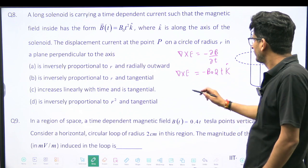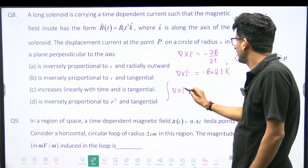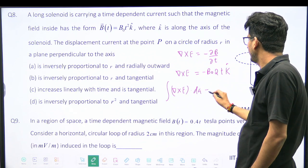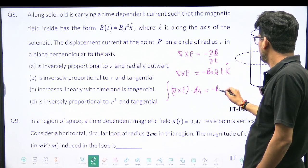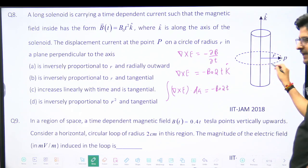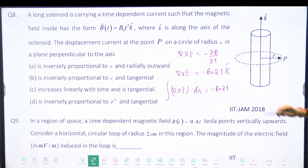Now integral del cross E dot da is equal to minus B₀ 2T times this area. So this is B dot da. Only the effective area will be this area, because the magnetic field will be here. This radius is R. So what will be the effective area?